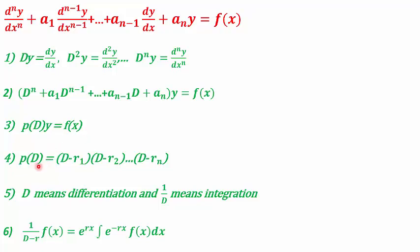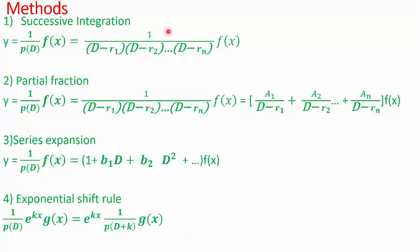Since P(D) is a polynomial, it can be factorized. Let's say the factors are (D - r1)(D - r2)···(D - rn). If D means differentiation, then 1/D will mean integration — remember this. There is a very important formula we will use throughout this method: 1/(D - r)·f(x) = e^(rx) · ∫e^(-rx)·f(x)dx. So 1/D means integration, and this formula says we are integrating f(x).